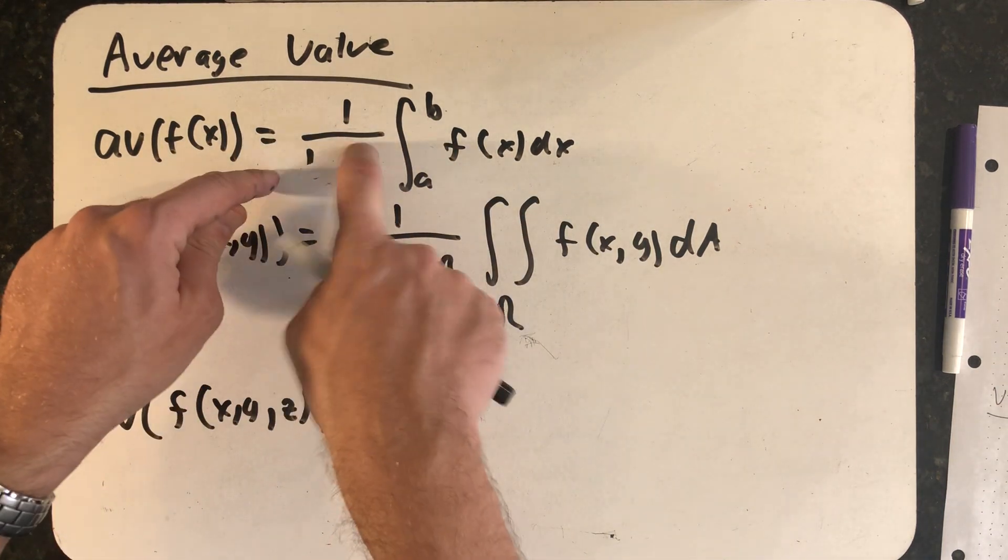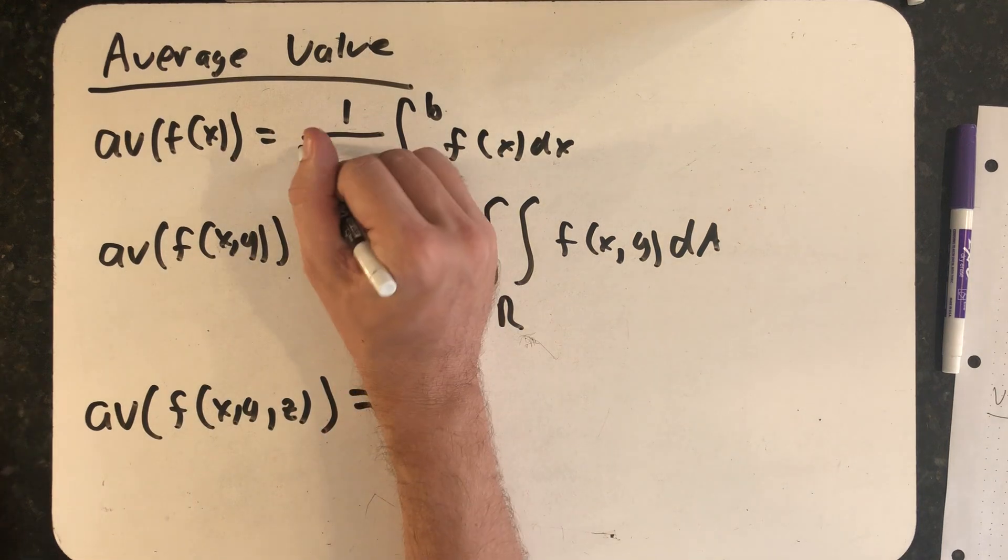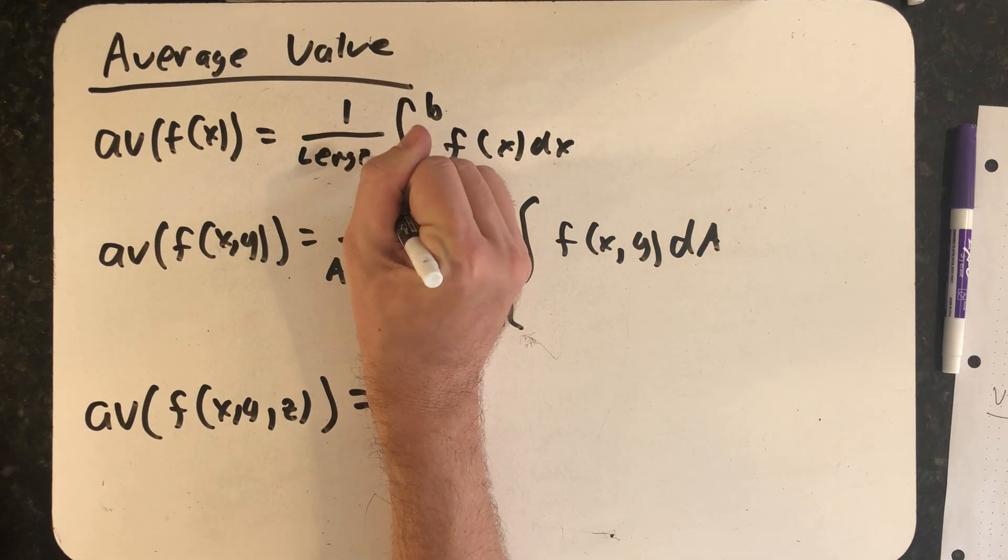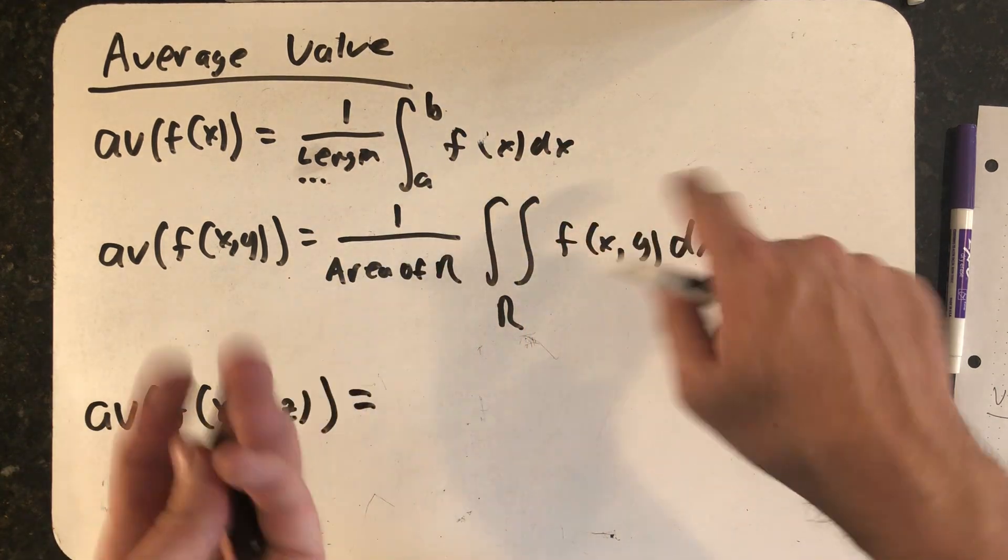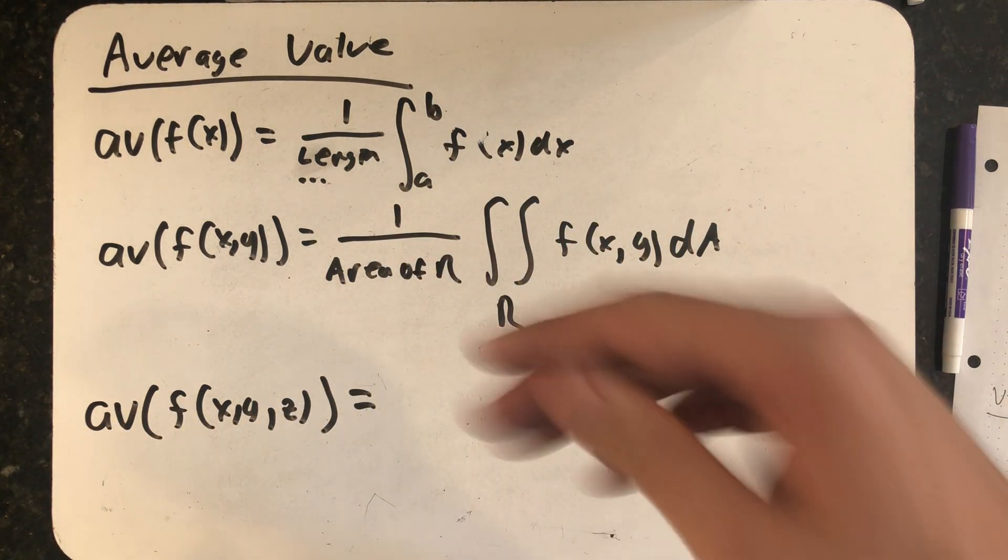But another way of thinking about that is instead of b minus a, that's the length of the interval. It's just what happens if I ignore the f of x and integrate with respect to dx.